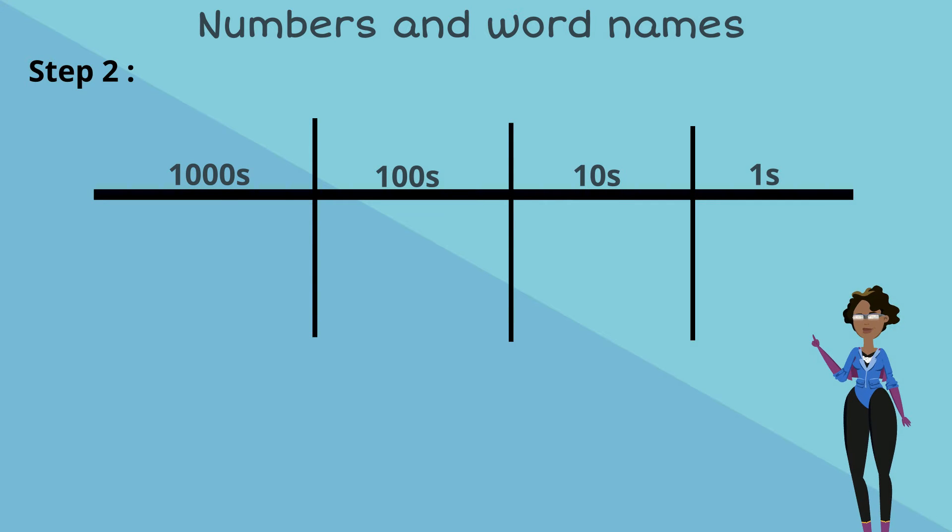Step 2: Let's look at the place value the numbers are in and write them accordingly. We know that 3 is in the thousands position, 4 is in the hundreds position, 5 is in the tens position and 8 in the ones.